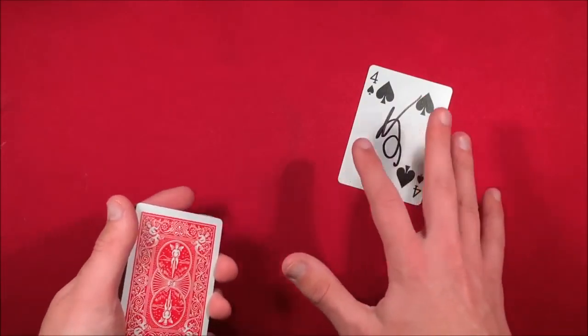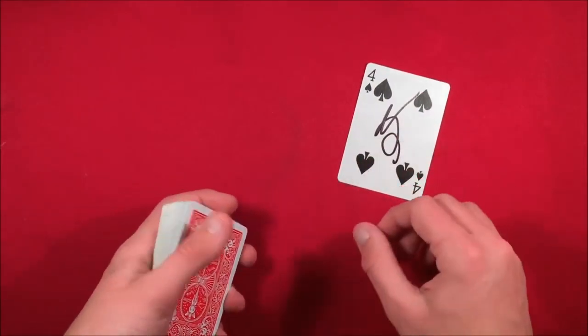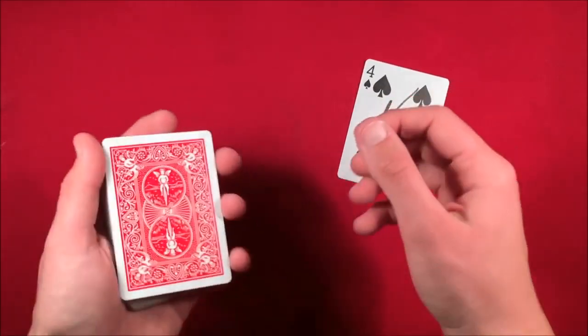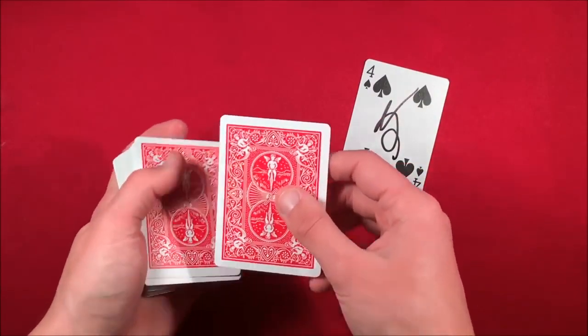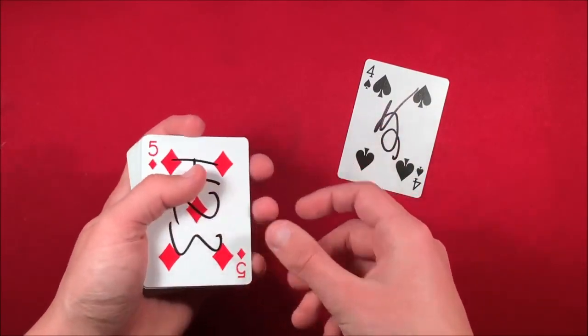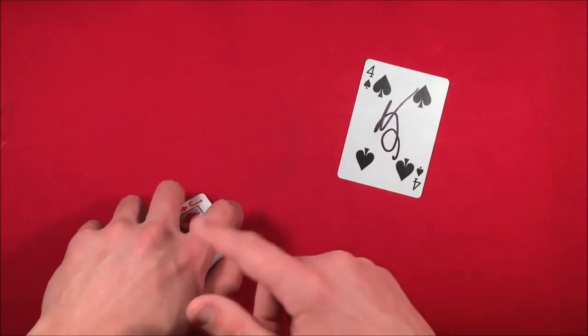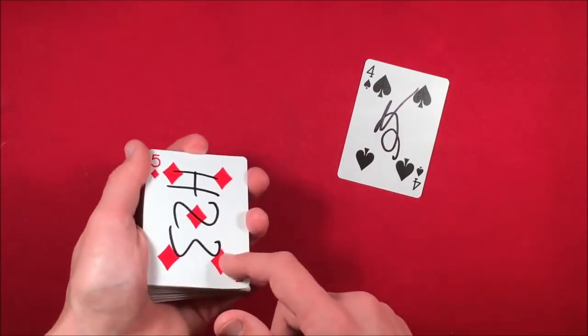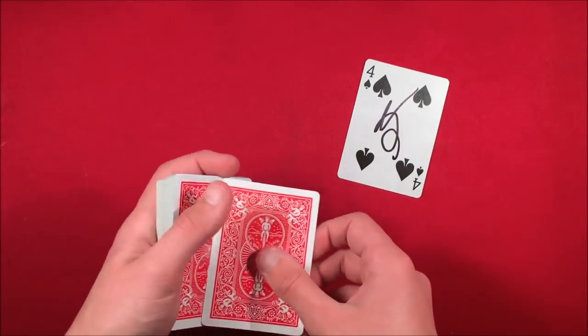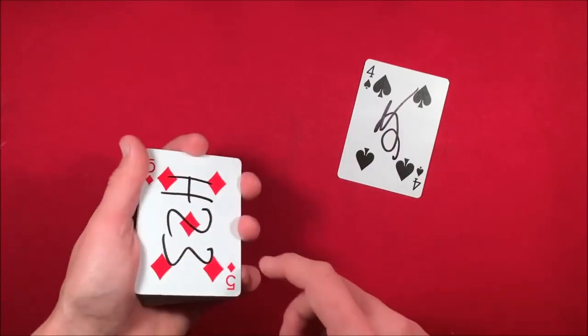As you have the spectator sign their own card, this way they're really focused on making their own signature, they're not looking at you. You need to be able to flip over the top card and catch a pinky break, and then leave the deck face down with your palm like this, this way the spectator can't see the face-up card. So while they're signing their card, you just very briefly flip over that card, catch a pinky break, and leave your hand face down.